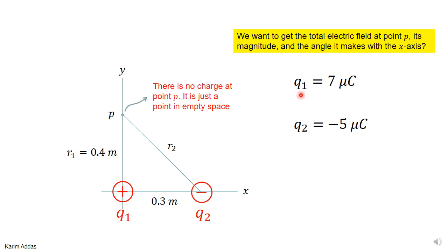They gave you the charge q1 and its value, and the charge q2 and its value. The required quantities are the total electric field at point P — its magnitude and the angle it makes with the x-axis.